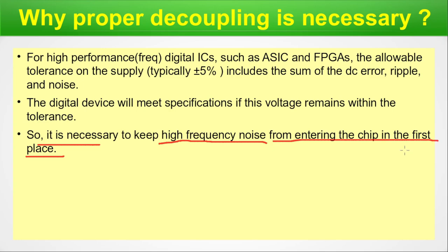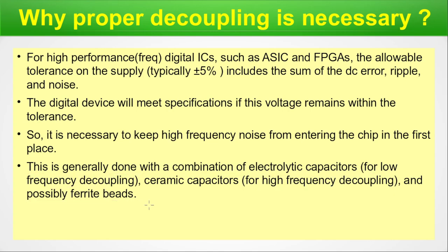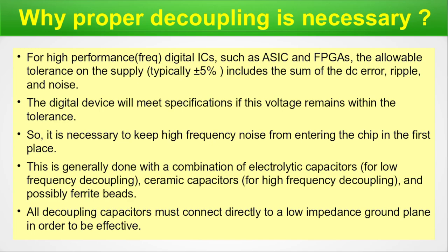It is necessary to keep high-frequency noise from entering the chip in the first place. For this reason, we have various types of DCAPs. This is generally done with a combination of electrolytic capacitors for low-frequency decoupling, ceramic capacitors for high-frequency decoupling, and possibly ferrites. All decoupling capacitors must connect directly to a low-impedance ground plane to be effective — acting as a shunt to pass noise to ground, preventing tolerance from exceeding the plus or minus 5% ceiling.